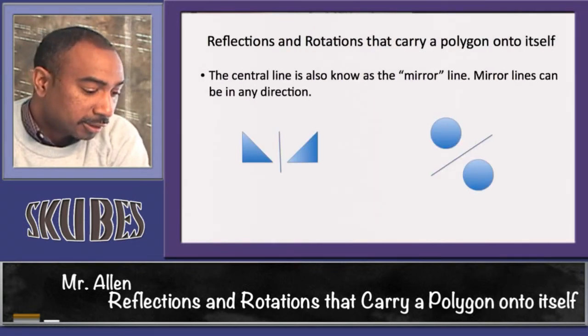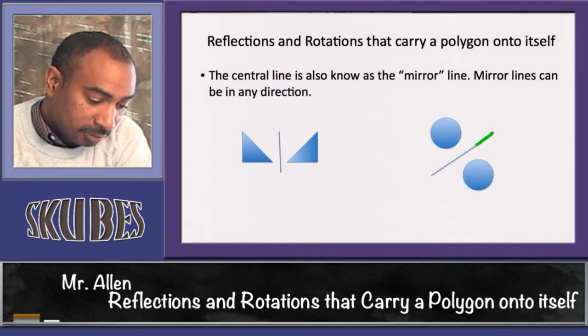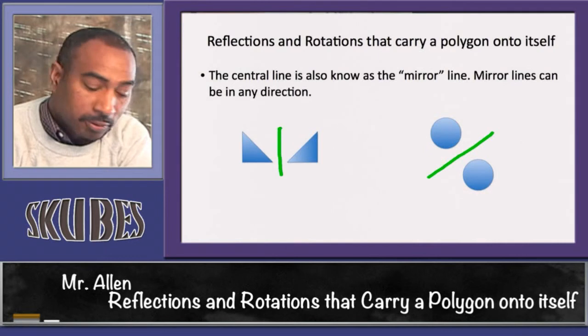The central line is also known as the mirror line. The mirror line could be in any direction. As you notice, it could be slant, it could be vertical, or it could be horizontal.